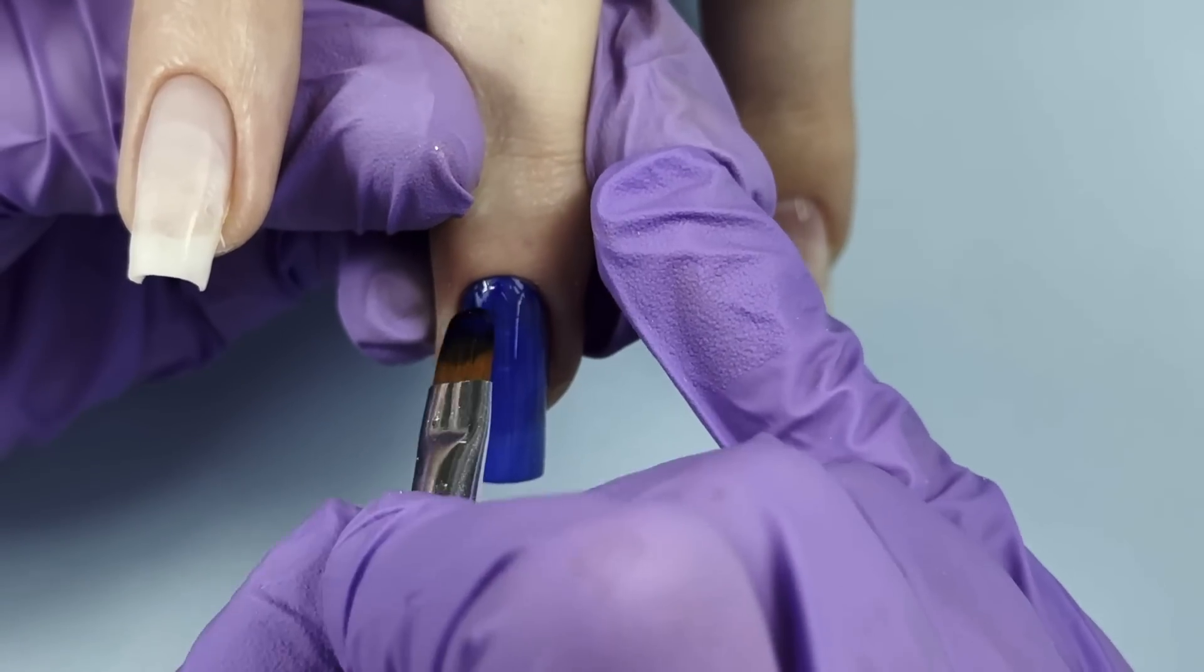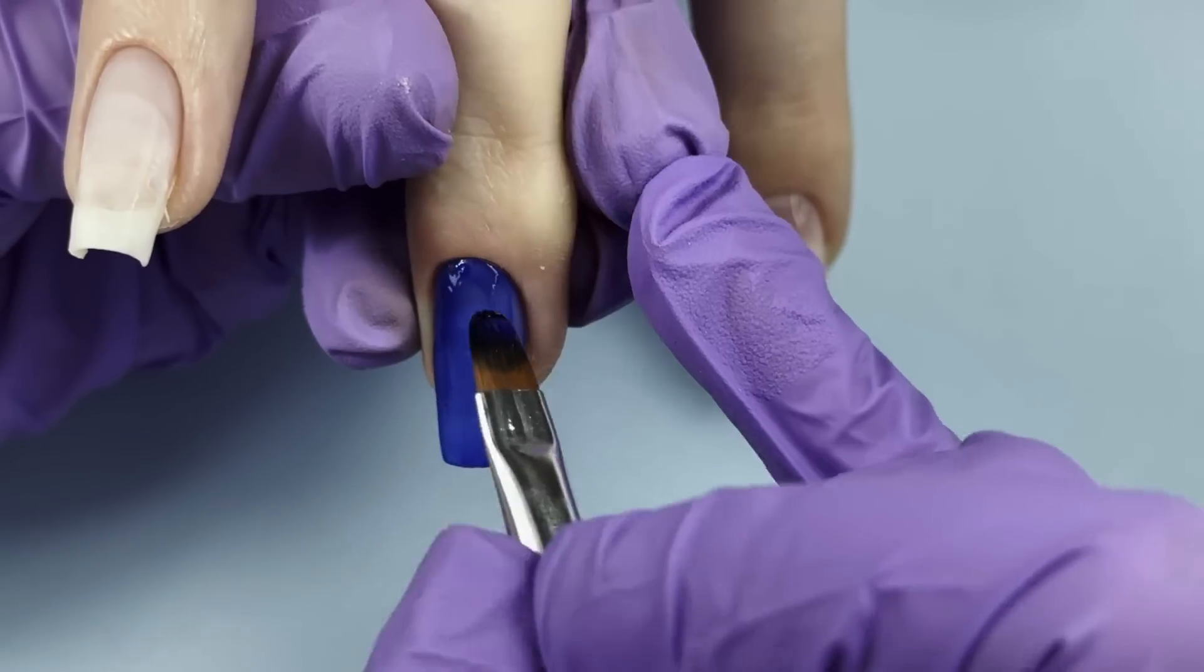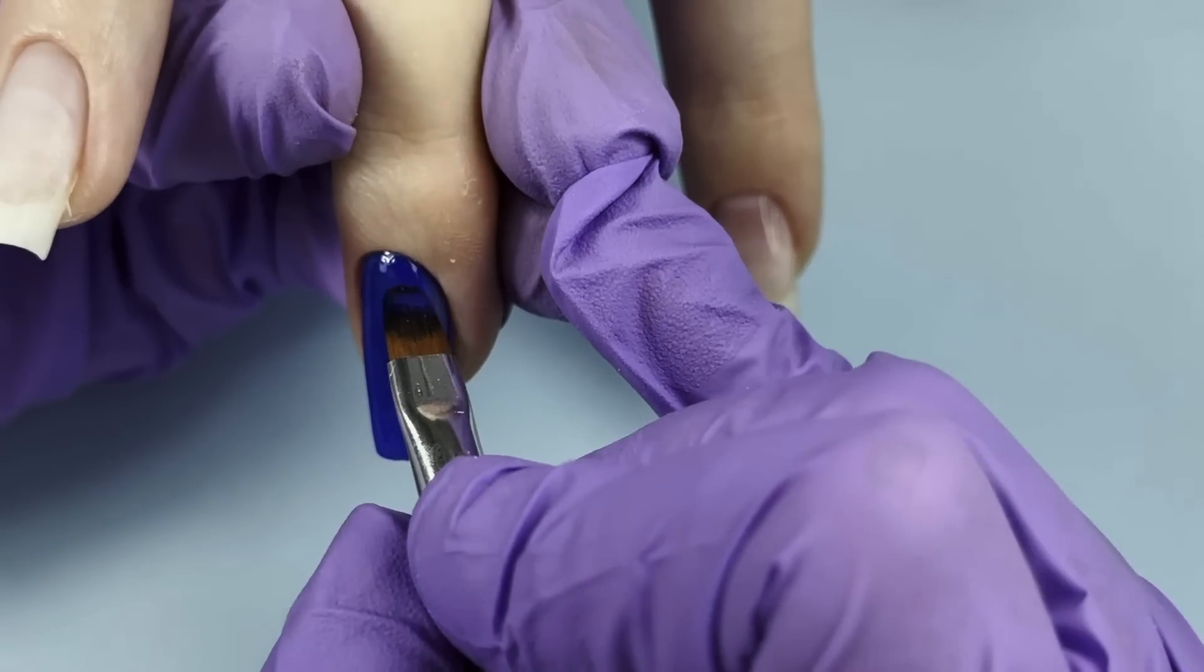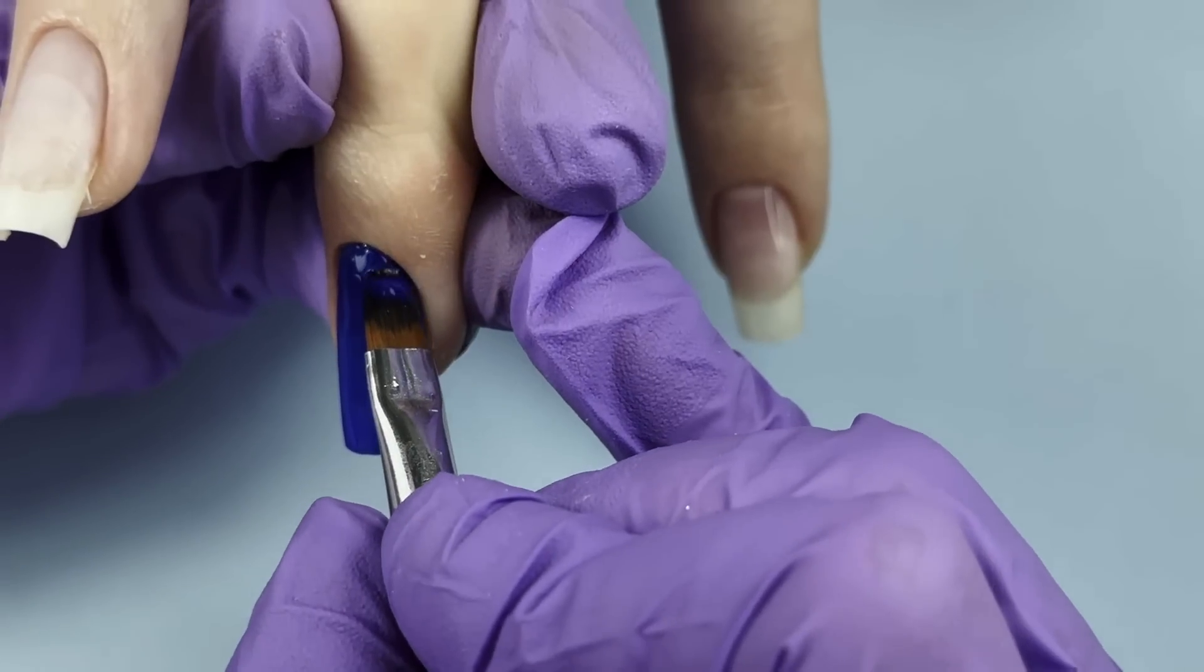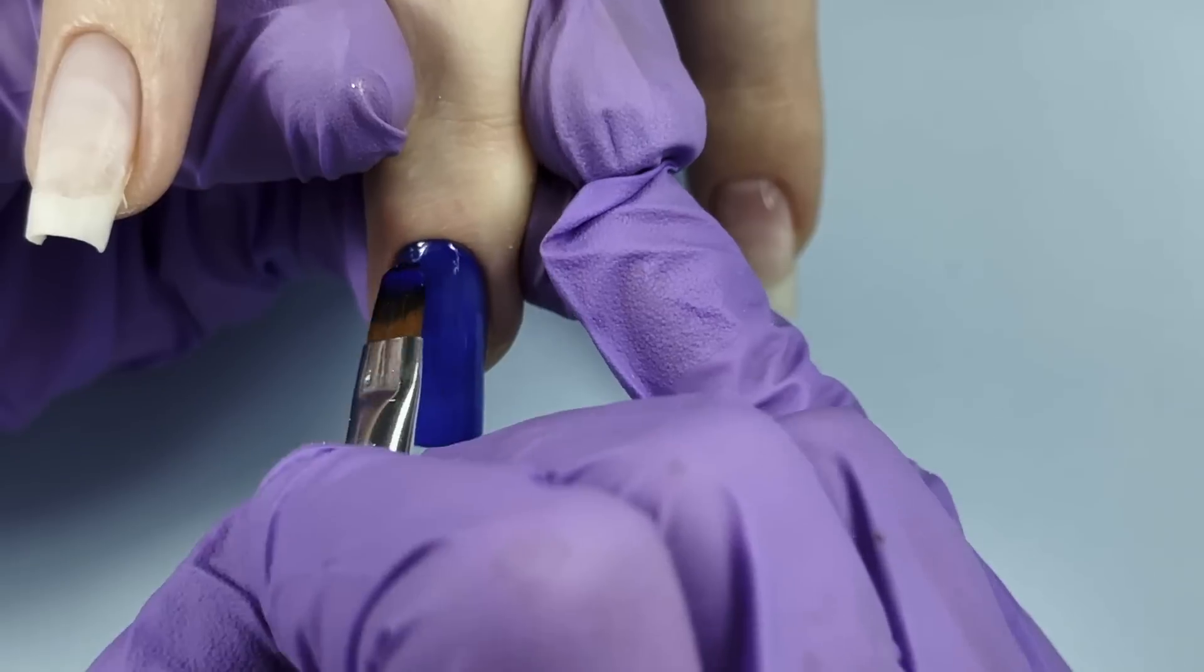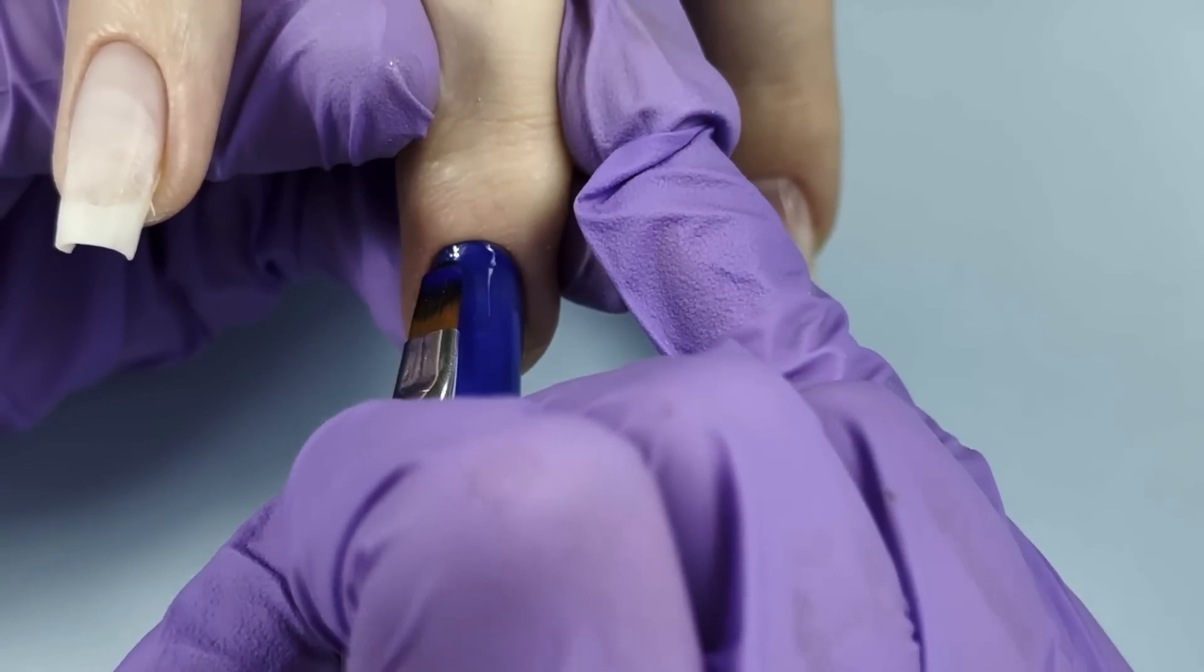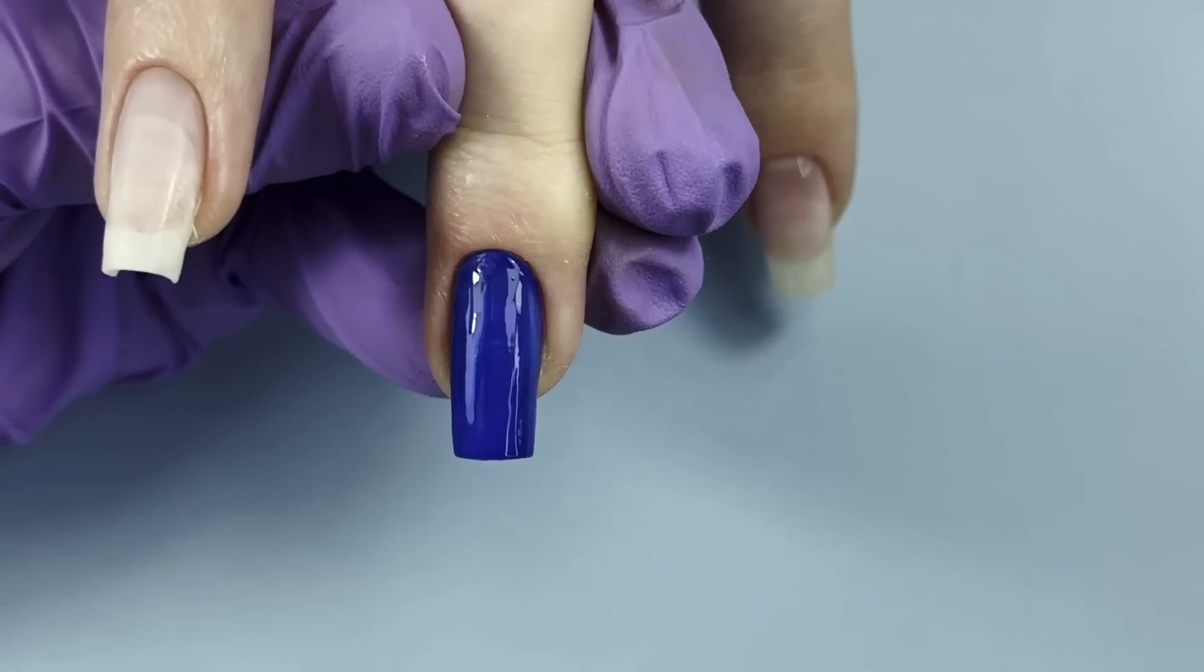As we decided to do a sharp square shape today, it's also important to not apply too much product on the free edge, because if you do it may ruin the shape a little bit. So in order to keep these corners sharp, we need to apply a really thin coat. So I apply the first one - and yes, this was just one coat.